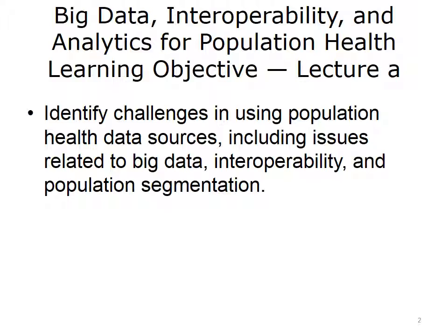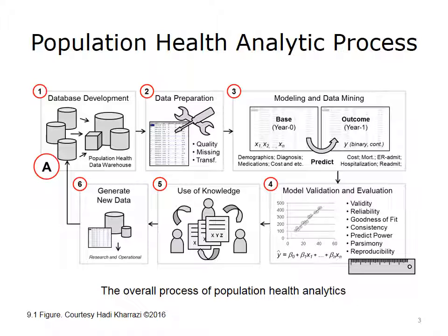This lecture discusses the common data challenges faced by population health analysts. This diagram shows the overall steps involved in developing analytics for population health management and risk stratification. As shown in box 1, the first stage involves the merging of various data sets and developing a centralized or distributed population health data warehouse. These data warehouses usually include independent variables such as demographics, diagnoses and medications, and also the dependent variables, also known as the outcome variables such as cost, hospitalization, emergency department ED admission, and other types of utilization variables.